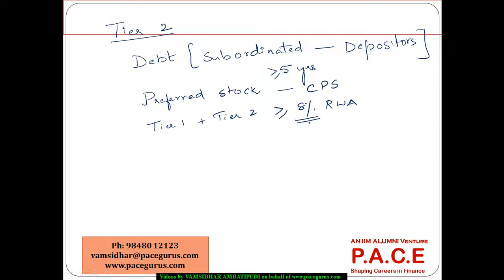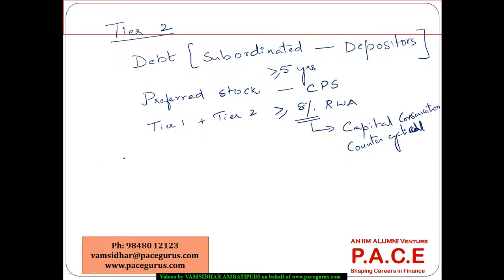Even in Basel 1 and Basel 2 this requirement was the same, but there are two additional things that are going to get added to this list — we will talk about a capital conservation buffer as well as a counter-cyclical buffer, which would typically increase this requirement quite drastically. But purely from the perspective of Tier 1 and Tier 2, the requirement is around 8% of total risk-weighted assets.